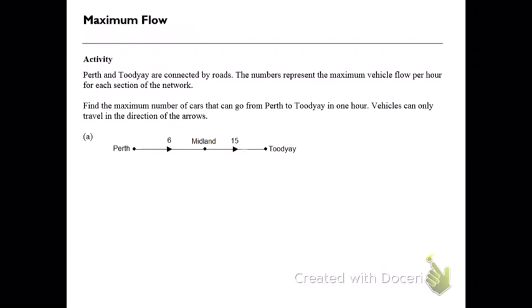Perth and Toowoomba are connected by roads. The numbers represent the maximum vehicle flow per hour for each section of the network. Find the maximum number of cars that can go from Perth to Toowoomba in one hour, noting that vehicles can only travel in the direction of the arrows. The number 6 might represent 600 cars per hour, which is the maximum number of cars that the road can handle travelling down at each hour.